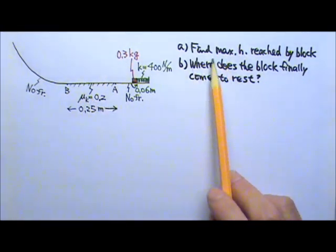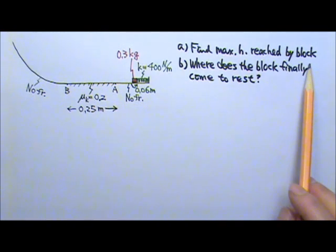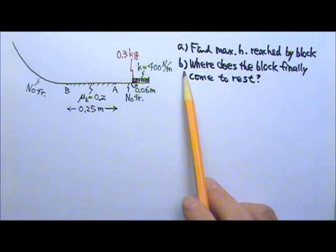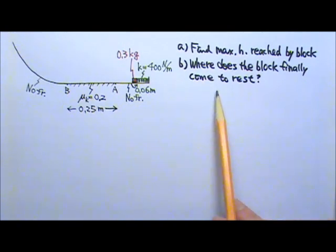Find the maximum height reached by the block on the left side of the track. And in part B, where does the block finally come to rest?